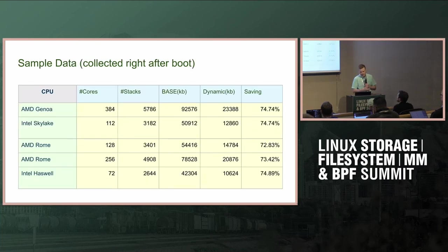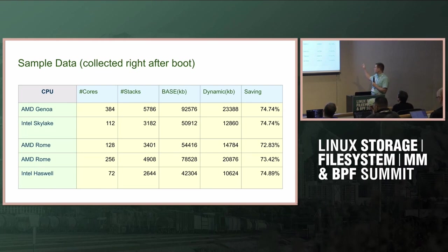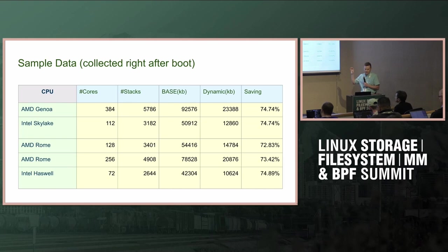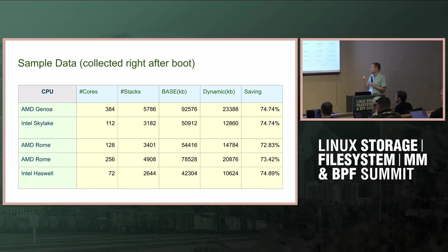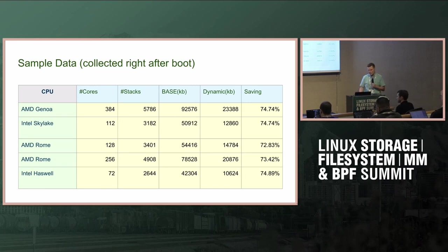I verified it on a number of AMD and Intel machines. It shows about 72–75% savings in stack memory, but I just booted those machines — I didn't run any workload. If we had a real workload the savings would be much greater, because every user thread has an associated kernel stack, and we have languages like Go and Java that make it very easy to create millions of threads on a single machine.